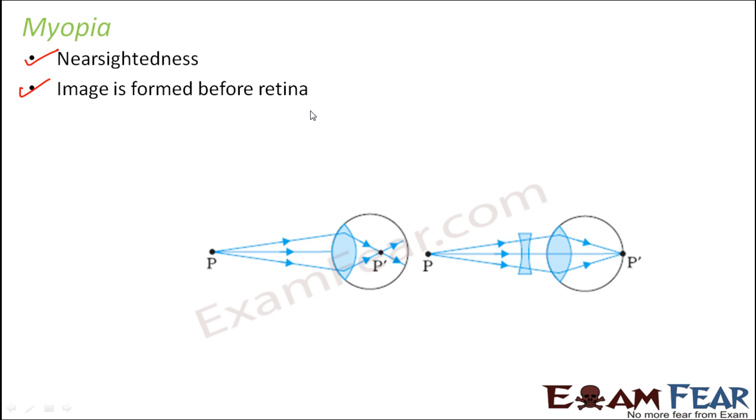In fact, the image is formed before retina. If you see here, this is how the defect is. This is myopia. In case of myopia, when you look at a particular object, the image instead of forming on the retina, it forms before retina. That is why you can see nearby objects but you are unable to see distant objects clearly.